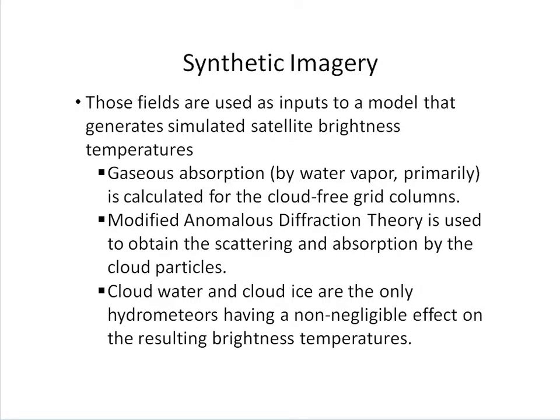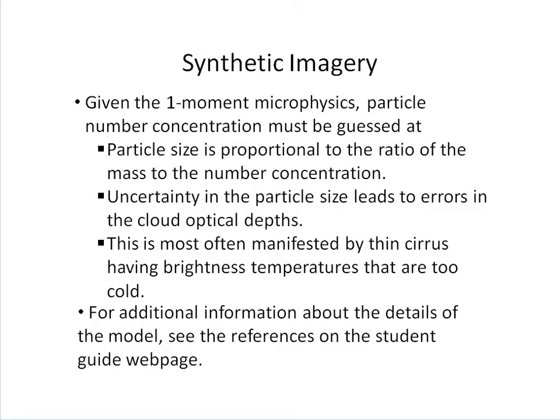Those fields are used as inputs into a model that generates simulated satellite brightness temperatures. Gaseous absorption, by water vapor primarily, is calculated for cloud-free grid columns, and modified anomalous diffraction theory is used to obtain scattering and absorption by cloud particles. Cloud water and cloud ice are the only hydrometeors having a non-negligible effect on the resulting brightness temperatures. Given the one-moment microphysics, particle number concentration must be guessed at, leading to uncertainty in particle size, which causes errors in cloud optical depths. This is most often manifested by thin cirrus having brightness temperatures that are too cold. For more details, see the references on the student guide webpage.